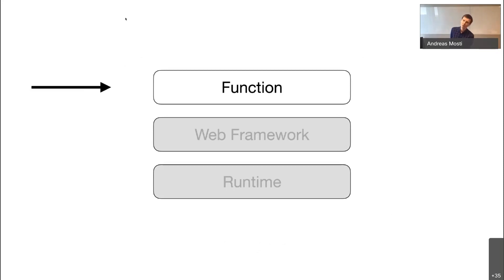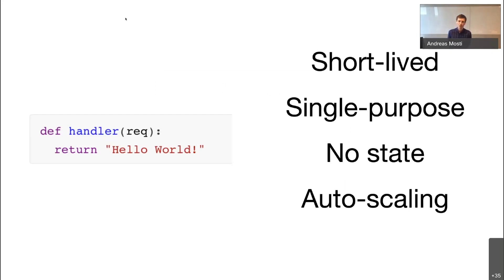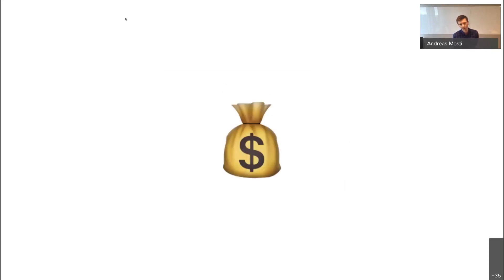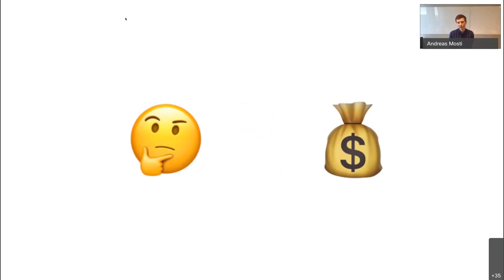Some tips for writing serverless functions: they should be short-lived, single-purpose, stateless, and auto-scaling. A typical Python handler just takes a request and returns 'Hello World' — that's how simple a function can be. A lot of projects have had huge success with the serverless pattern and saved a lot of money. If you don't need to maintain servers or think about runtimes, that's great, and since you only pay for actual execution time, you can save significantly.